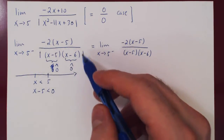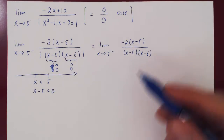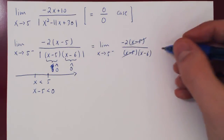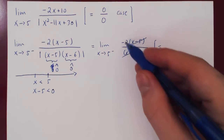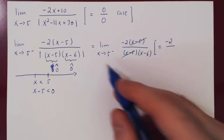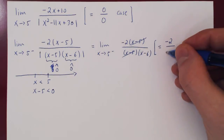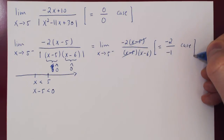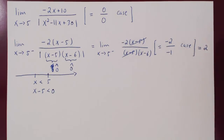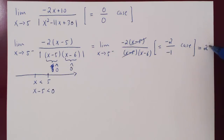The limit becomes negative 2 times (x minus 5) over (x minus 5)(x minus 6). Because the argument of the absolute value is positive, we just drop the absolute value with no negative sign. We cancel the common factor (x minus 5). As x approaches 5, x minus 6 approaches negative 1, giving us negative 2 over negative 1, which is positive 2. So the limit from the left equals positive 2.